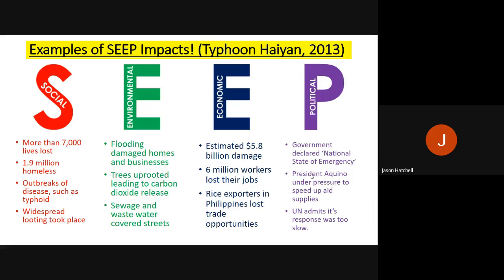The third political impact is that the United Nations — a worldwide, global-scale cooperation between nations — has admitted since this typhoon that they were too slow to respond to its impacts. They were too slow in getting aid, food supplies and water to Tacloban and the surrounding areas, and this impacted people's ability to recover. Those are the political impacts of this case study, hopefully helping you understand how we use SEEP in relation to impacts and responses.